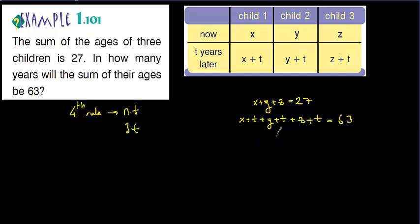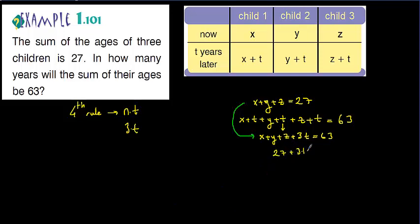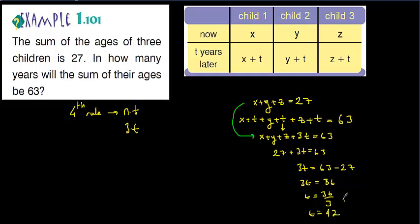We have two equations: x plus y plus z equals 27, and x plus t plus y plus t plus z plus t equals 63. Combining, x plus y plus z plus 3t equals 63. Since x plus y plus z equals 27, we get 27 plus 3t equals 63. So 3t equals 36, and t equals 36 over 3, which means t equals 12. After 12 years, the sum of their ages will be 63.